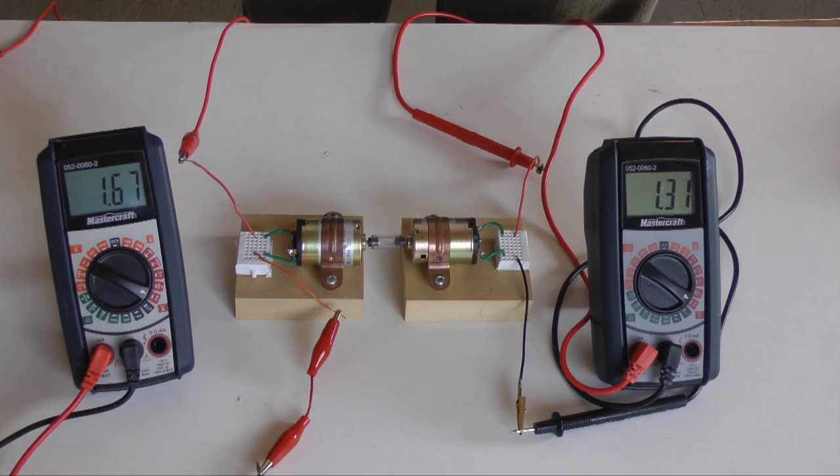Here are our numbers. On the motor side, we have an average of 1.67 amperes of current. On the generator side, we have 1.31 amperes of current.